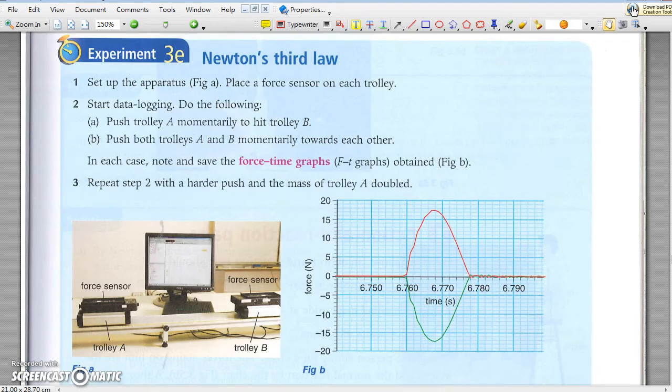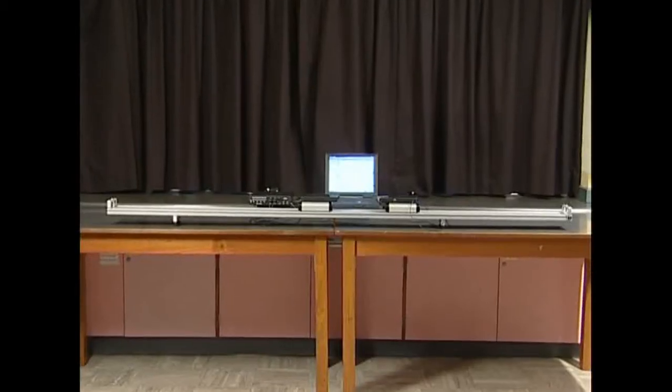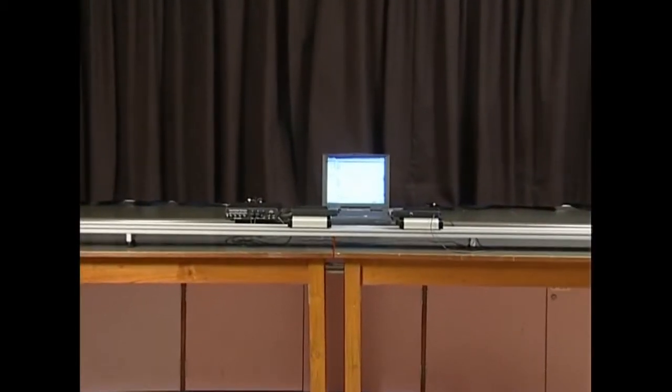Experiment 3E makes use of two force sensors connected to the data logger to show that the pair of forces is the same in magnitude but opposite in direction. Set up the apparatus as shown.